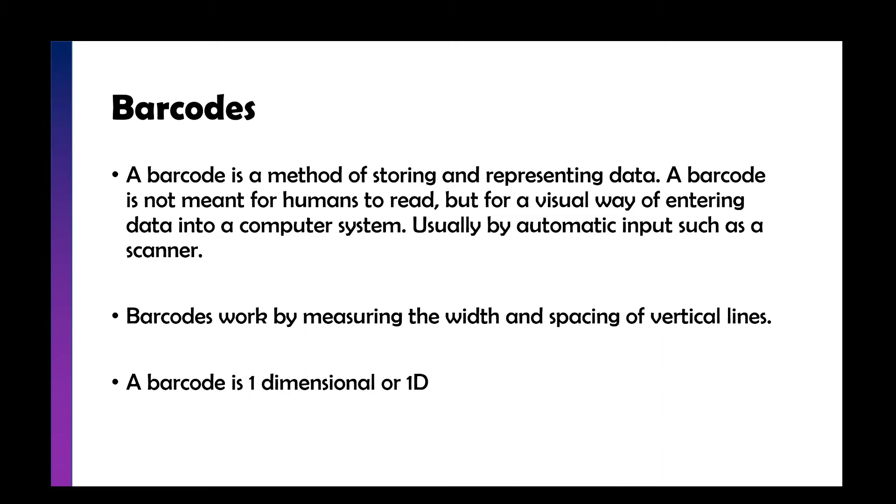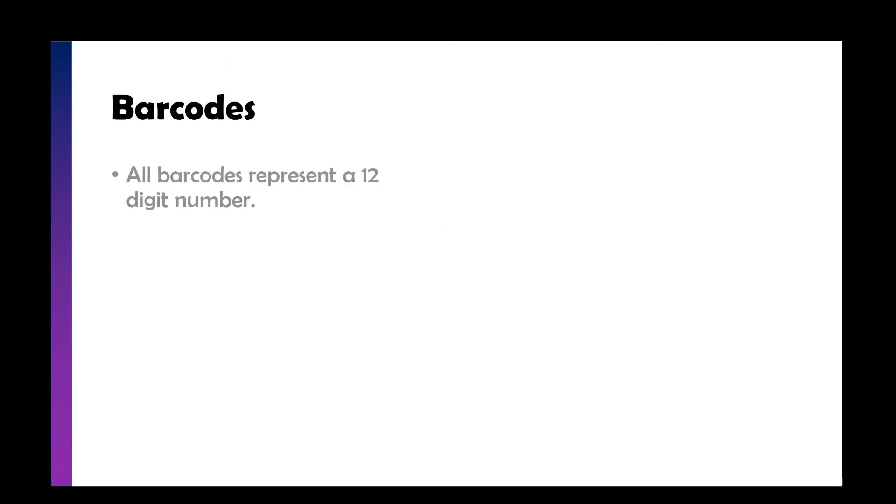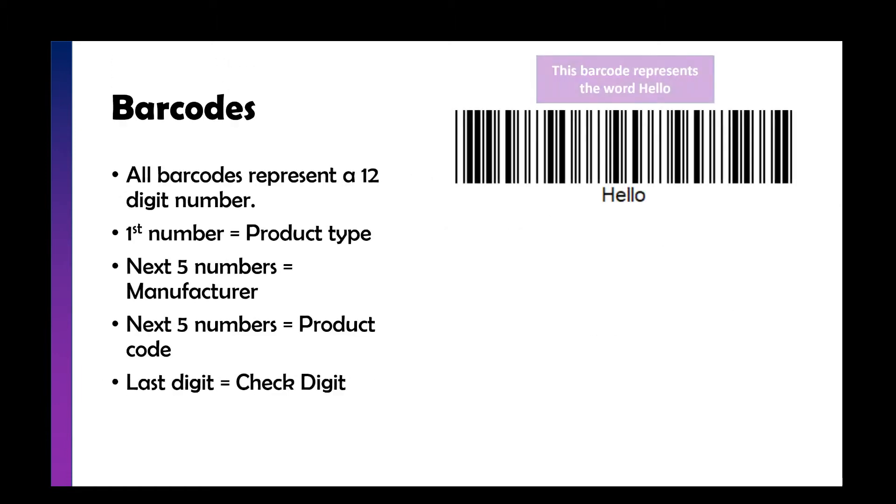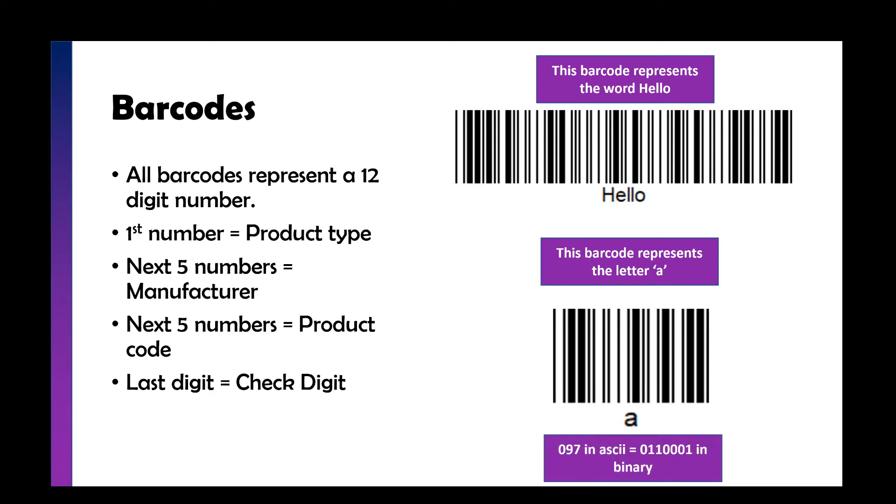Now it works by measuring the width and spacing of vertical lines and it's what's called one dimensional. All barcodes should be a 12 digit number. In my two examples, I've just shown it simple using words. It should really be numbers, but I wanted to prove a point of it representing a binary number.